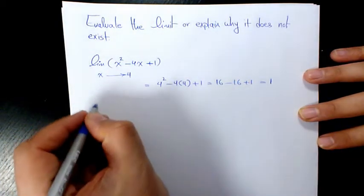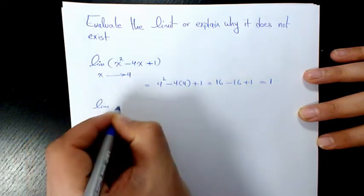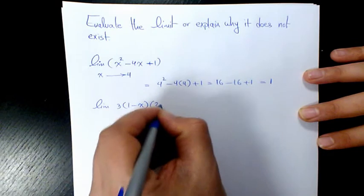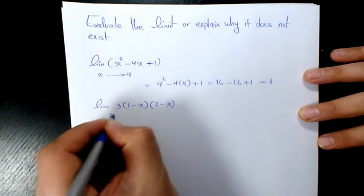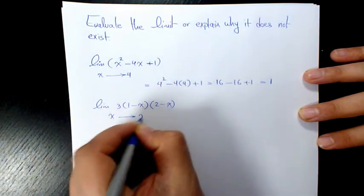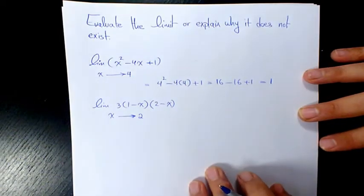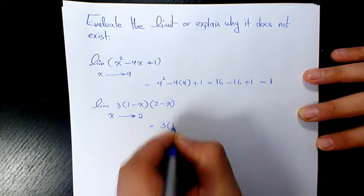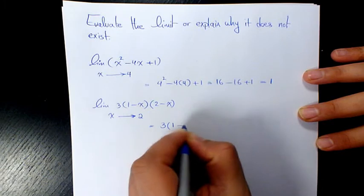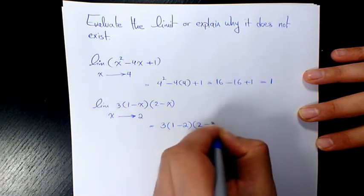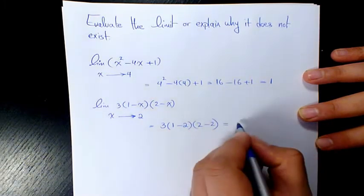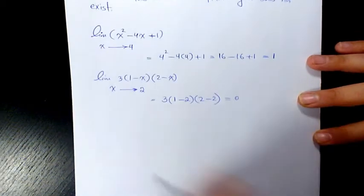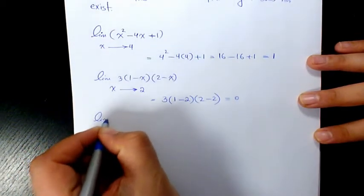Next example is the limit of 3 times (1 minus x)(2 minus x) when x is approaching 2. This case is going to be 3 times (1 minus 2)(2 minus 2), which is going to make it equal to 0.